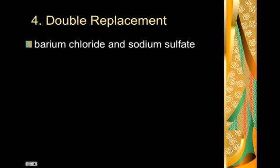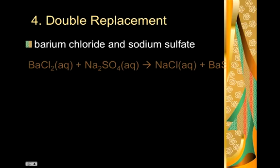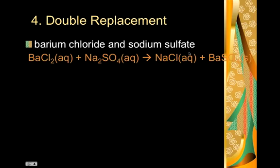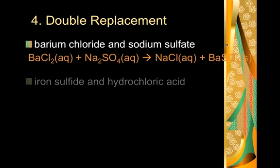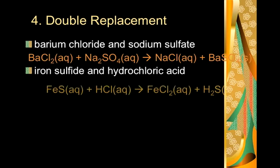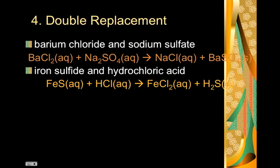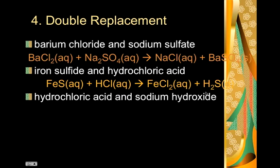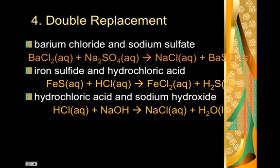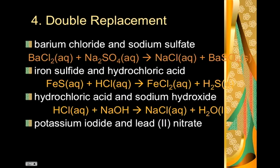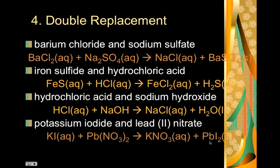Here are some examples of double replacements. Barium chloride and sodium sulfate makes sodium chloride, salt, gotta love that, and barium sulfate, which is a precipitate. We'll talk more about that later. Iron sulfide hydrochloric acid, you would see the hydrogen sulfide gas bubble off of that. Hydrochloric acid sodium hydroxide, the classic neutralization reaction. And potassium iodide lead nitrate. This product right here, lead iodide, is a really, really pretty bright yellow color. Toxic, but pretty.